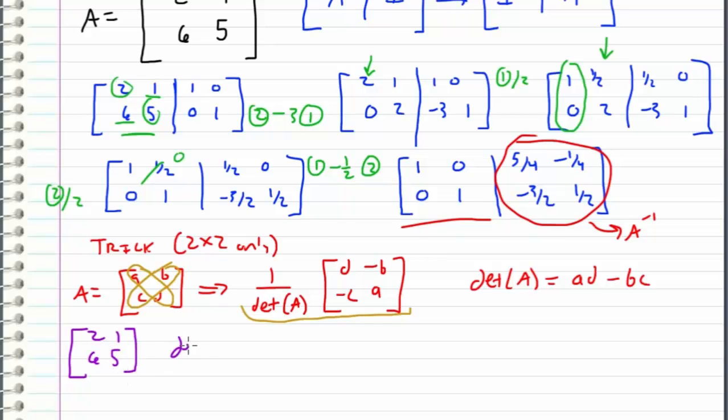We can compute the determinant of this matrix as equal to 2 times 5 minus 1 times 6 which is equal to 4.